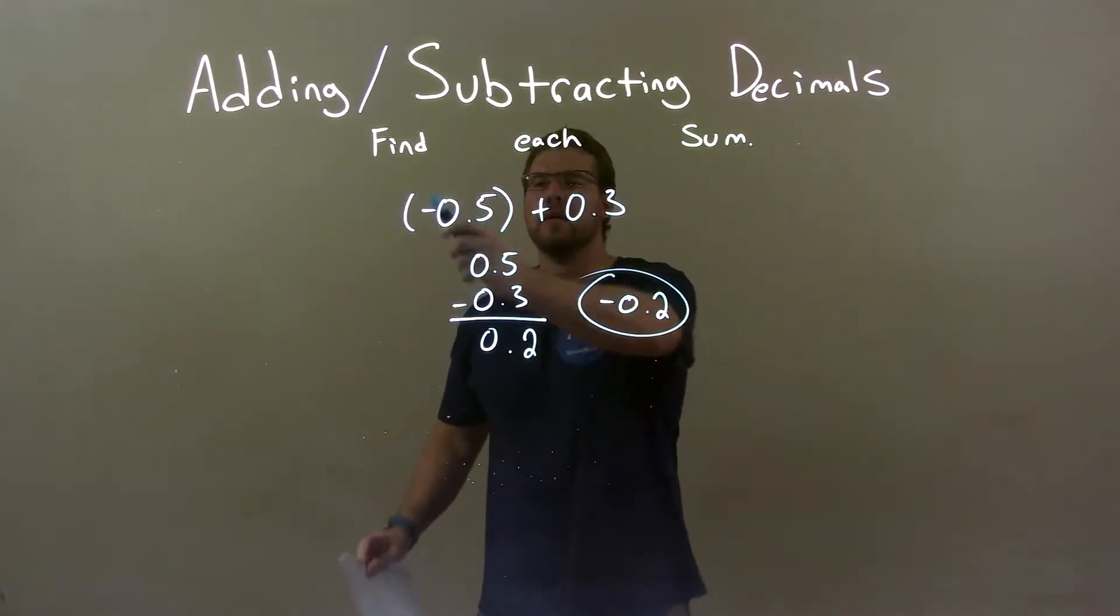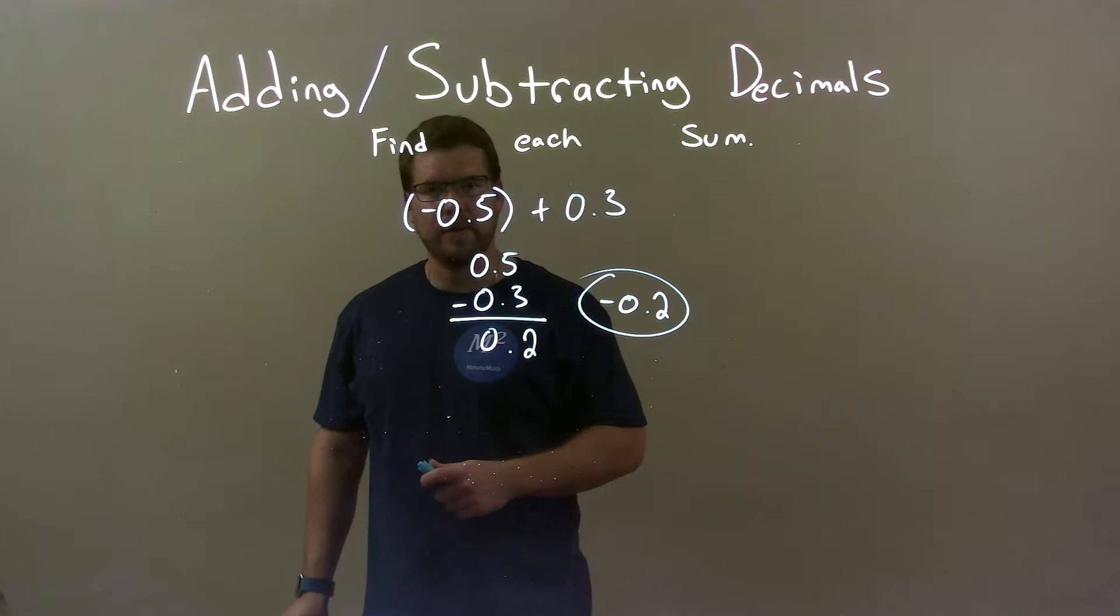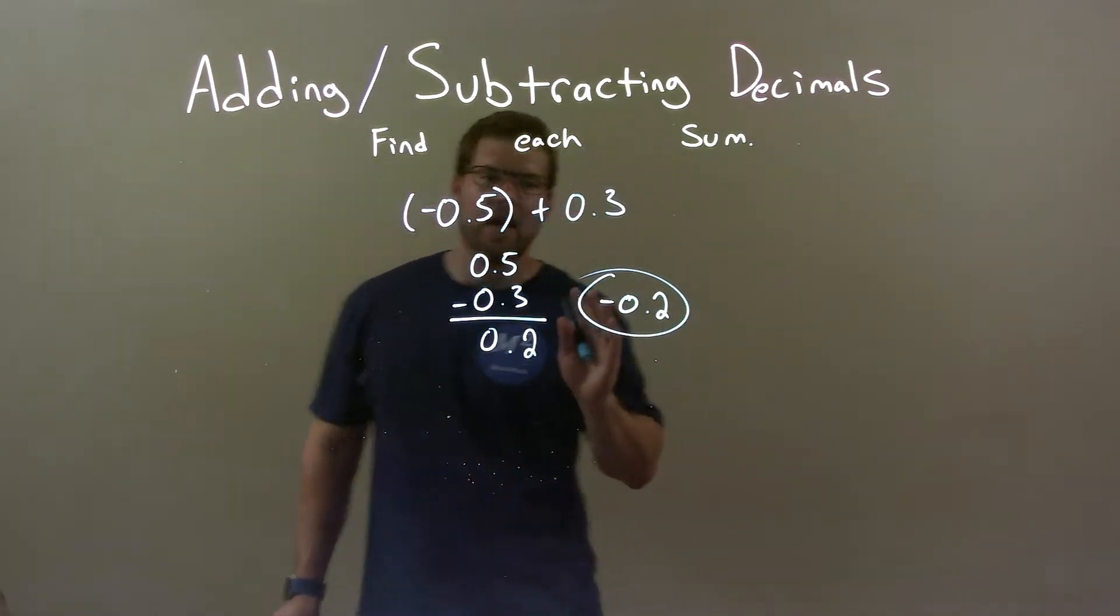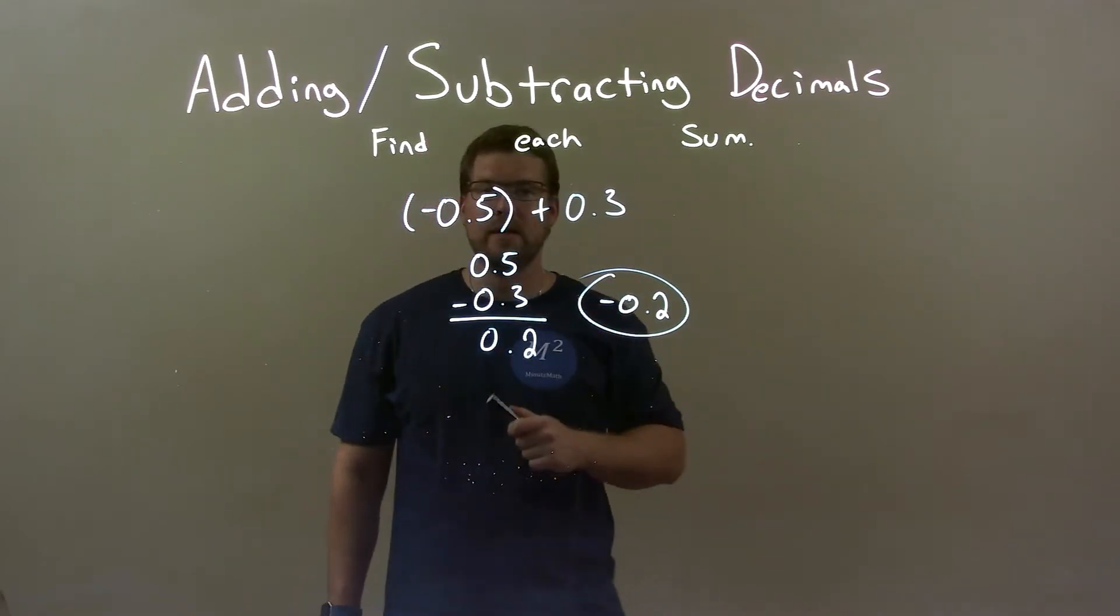So, quick recap. We're given a negative 0.5 plus 0.3 and we have to find that sum. Well, negative 0.5 is more negative than 0.3 is positive.